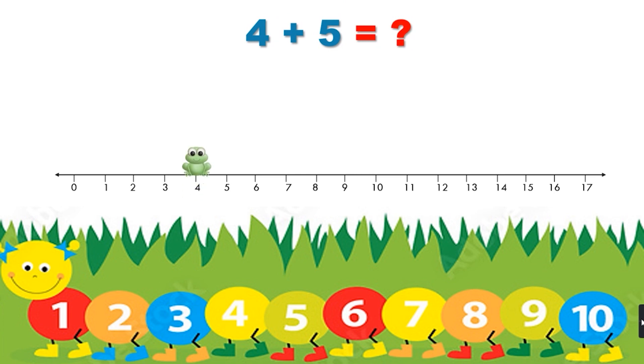We have our character on 4 as this is our first digit and it will jump 5 times forward. After jumping 5 times forward it will sit on 9. So that means 4 plus 5 is equal to 9.